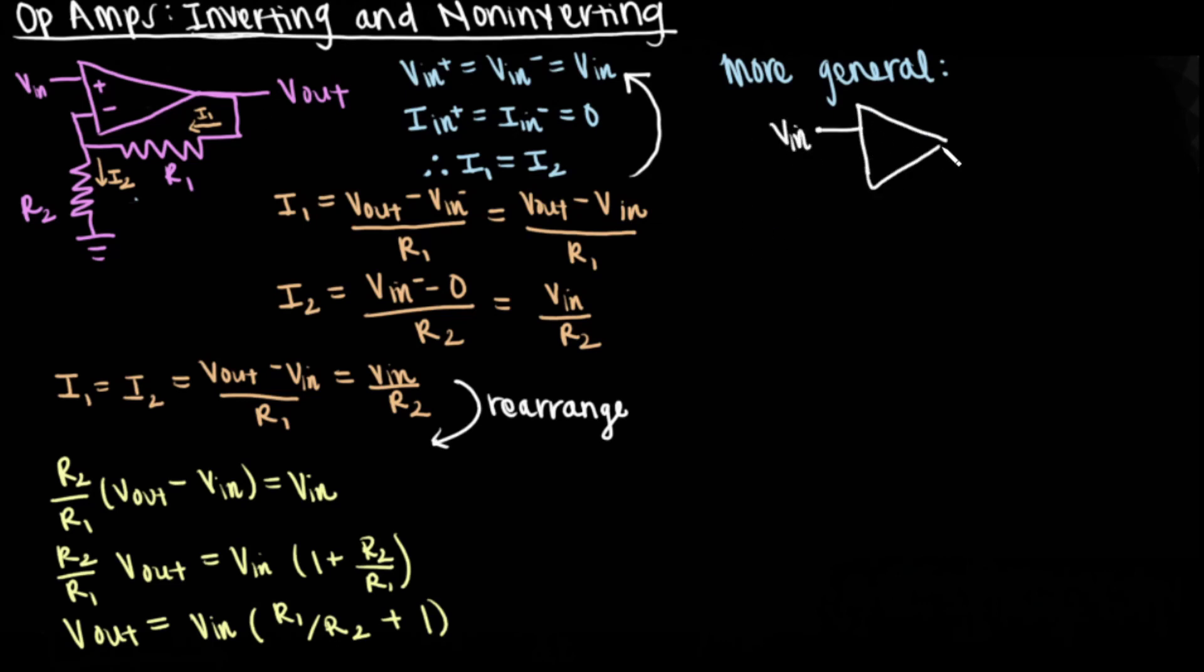Again, I'll show you the more general circuit. Non-inverting circuits are represented by any combination of circuit elements to create impedances 1 and 2. The transfer function, as a function of frequency, is Vout divided by VN equals 1 plus impedance 2 divided by impedance 1.